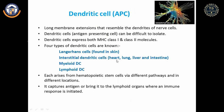Dendritic cells are antigen-presenting cells with long membrane extensions resembling the dendrites of nerve cells — hence the name. They are difficult to isolate because their projections break during isolation. They express both MHC class I and class II molecules, since they are both nucleated cells and antigen-presenting cells. Four types of dendritic cells exist: in skin they are called Langerhans cells; in heart, lung, liver, and intestine they are interstitial dendritic cells; and there are myeloid and lymphoid dendritic cells.